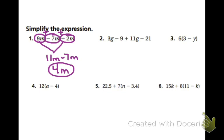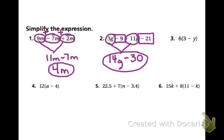Looking at example 2, or trying number 2, combine 3g with 11g, and negative 9 and negative 21. So 3 plus 11 is 14. Sorry about that. There's one of those mistakes. Would be 14g. And when we add the negative 9 and the negative 21, we get negative 30 as our final simplified expression.